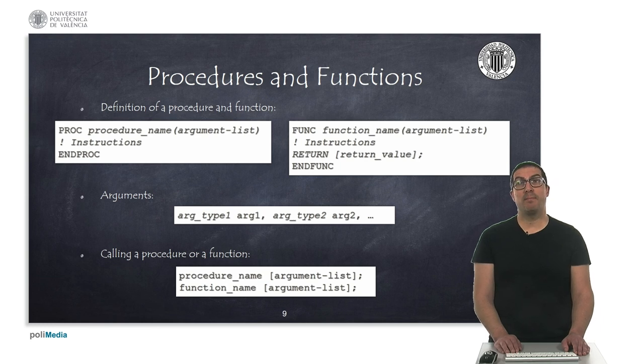In RAPID, we can define procedures and functions to properly organize and reuse our code. Procedures and functions can be defined with PROC and ENDPROC and FUNC and ENDFUNC keywords. Functions must necessarily return a value, so for that reason we must use the RETURN keyword. In addition, procedures and functions can include optional input arguments that will be defined as a comma-separated list indicating the type of variable and its name.